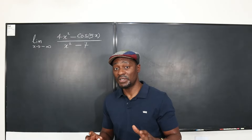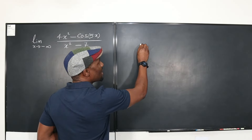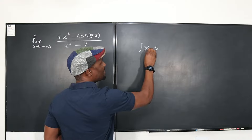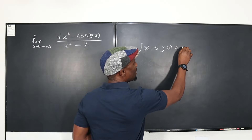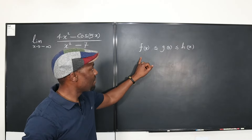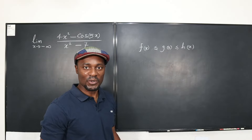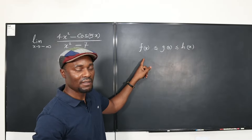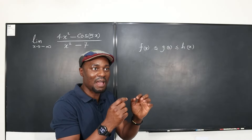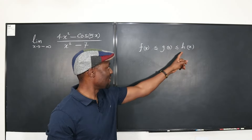So what really does the squeeze theorem say? If you have f(x) less than or equal to g(x) and g(x) less than or equal to h(x), and at some point f(x) equals h(x), then g(x) must equal both of them. So if this becomes 5 and this is 5, then this has to be 5 because it's squeezed between the two values — there cannot be a gap between a number and itself. You can't have something between 4 and 4; it must be 4.